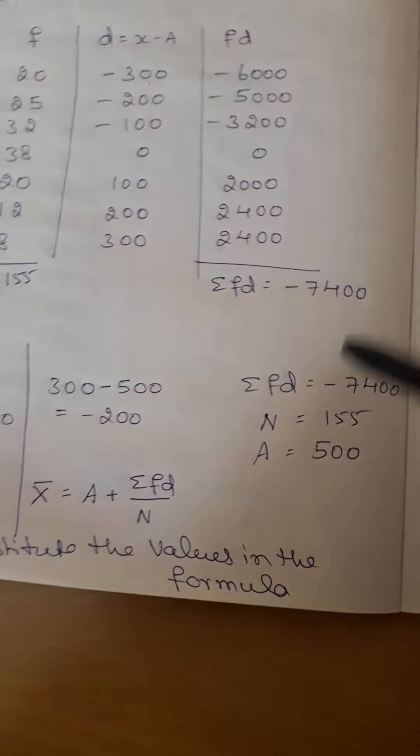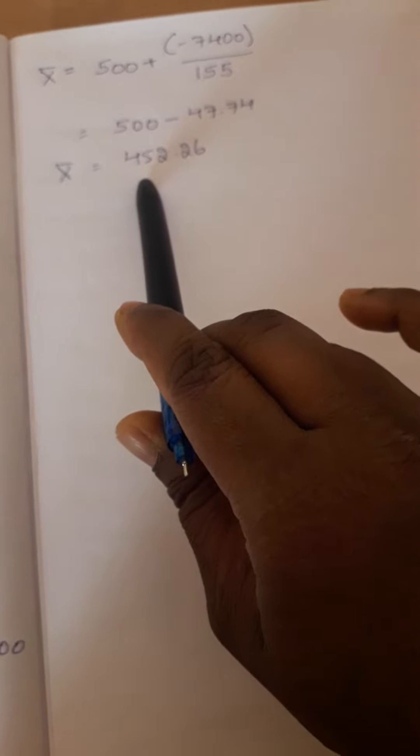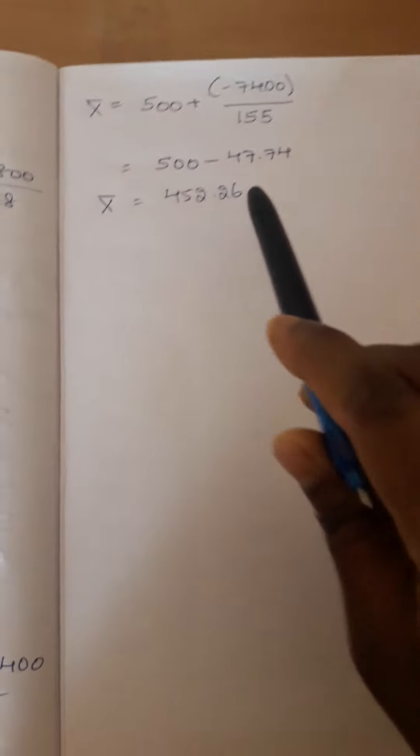Again, assumed mean that is 500, total frequency that is 155, summation fd minus 7400. Substitute the values in the formula. If we simplify this, first you have to simplify division then you go for addition. That is 500 minus 47.74, so that arithmetic mean will be 452.26.